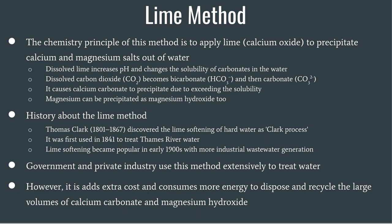What is the lime method? The chemistry principle of this method is to apply lime to precipitate calcium and magnesium salts out of the water. Dissolved lime increases the pH and changes the solubility of carbonates in the water. Dissolved carbon dioxide becomes bicarbonate and then carbonate, causing calcium carbonate to precipitate due to exceeding its solubility. Magnesium can also be precipitated as magnesium hydroxide.